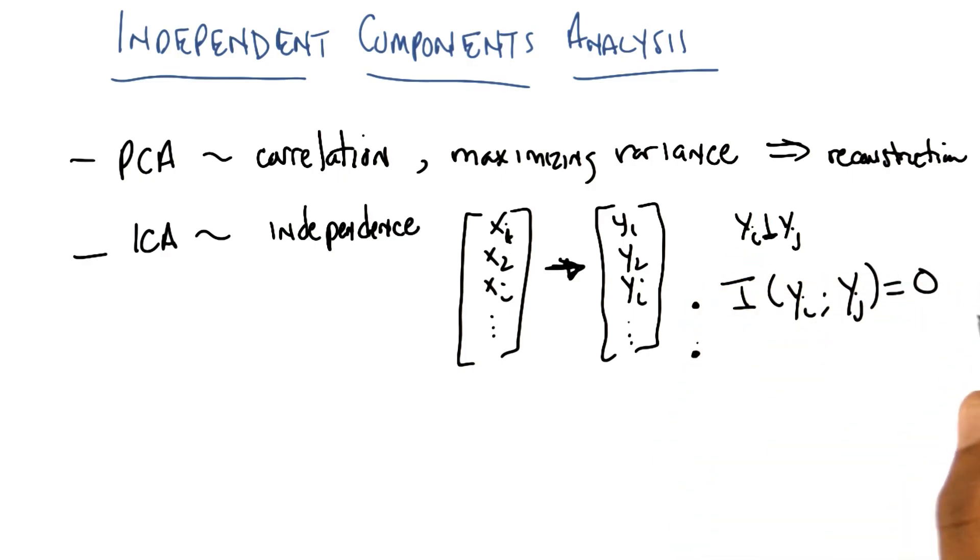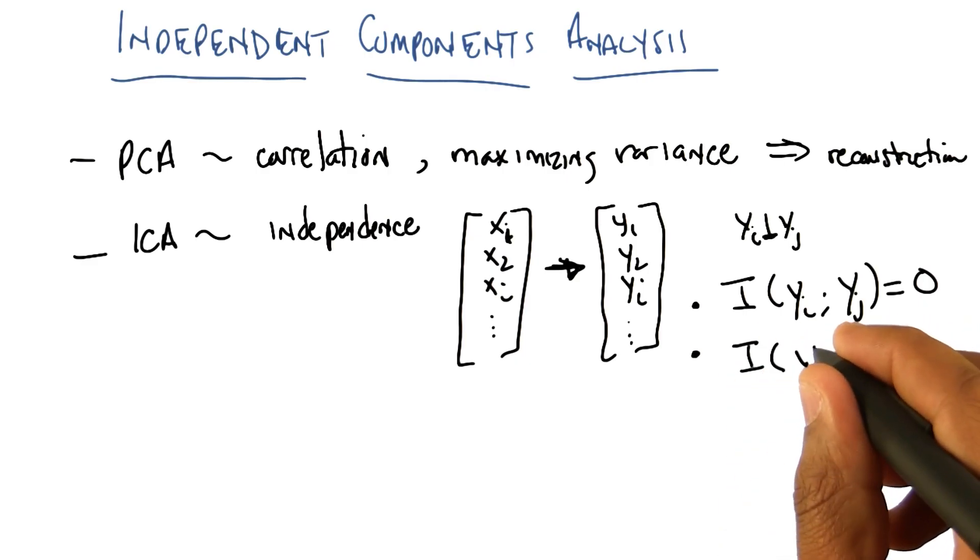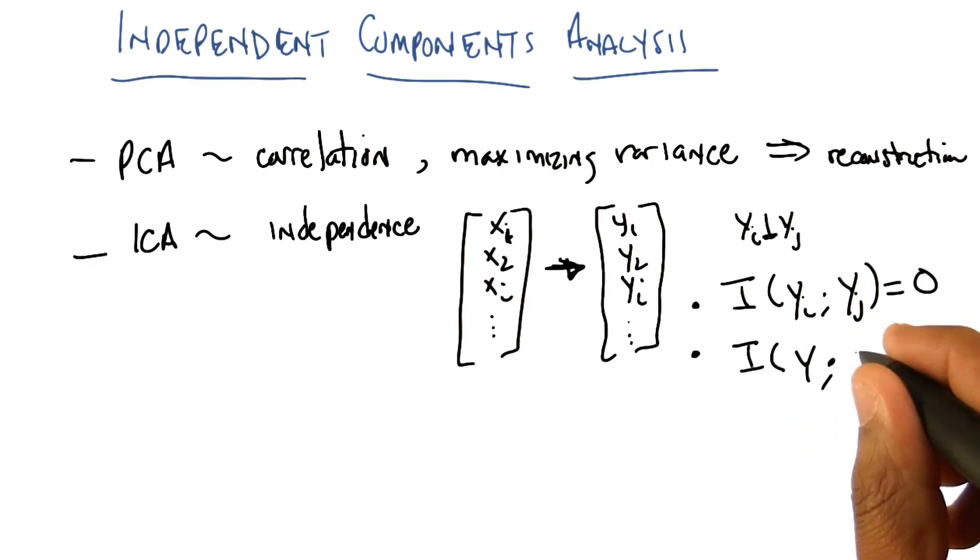And the second thing that it's trying to do is it's trying to make certain that the mutual information between all of the features, Y, and the original feature space, X, is as high as possible.